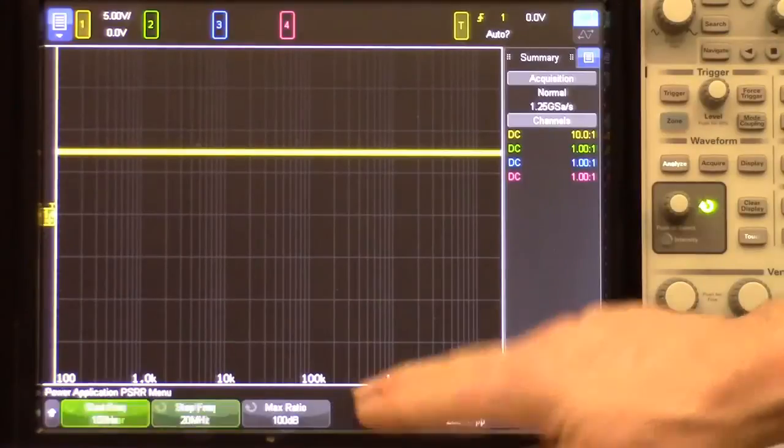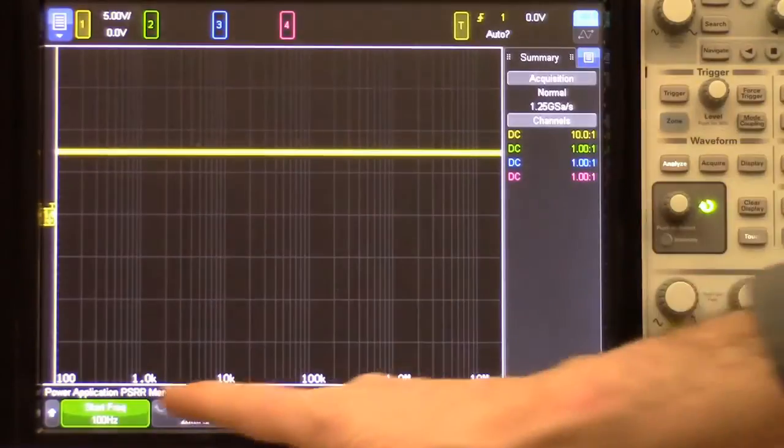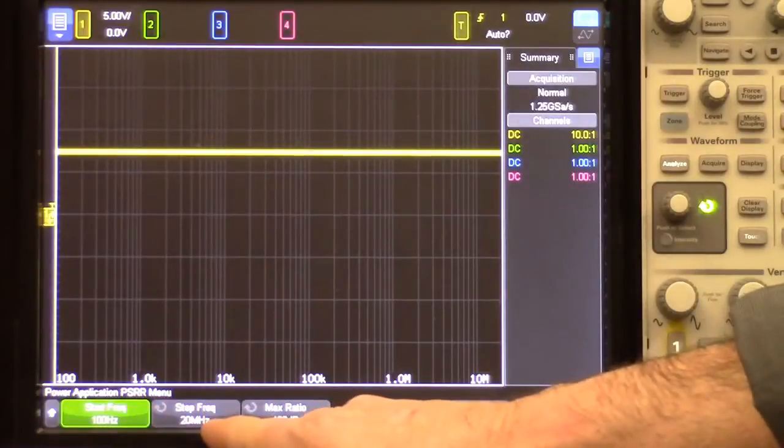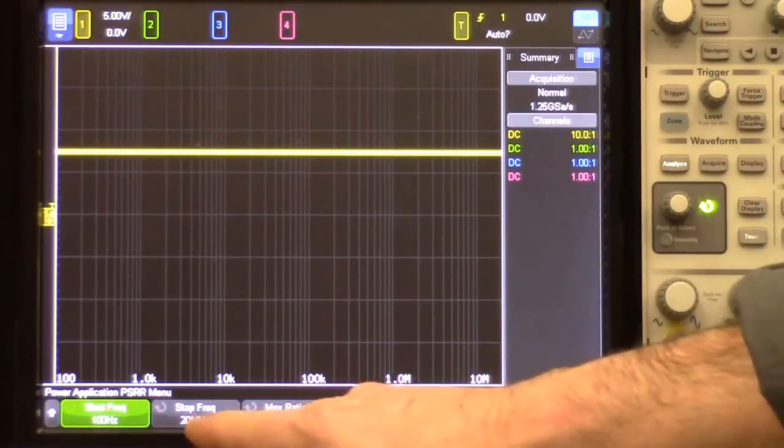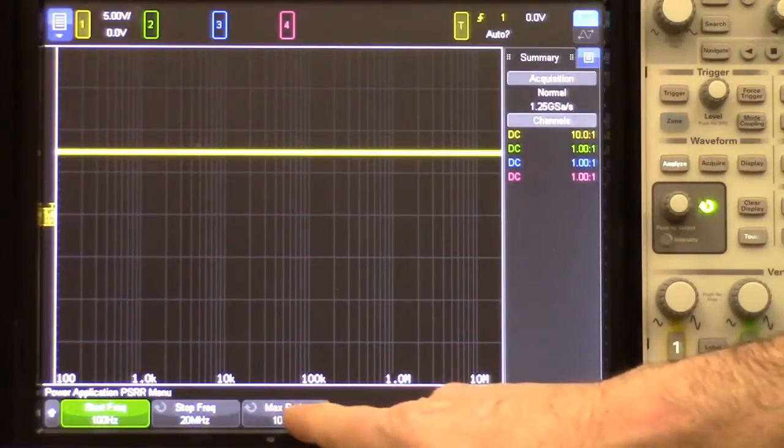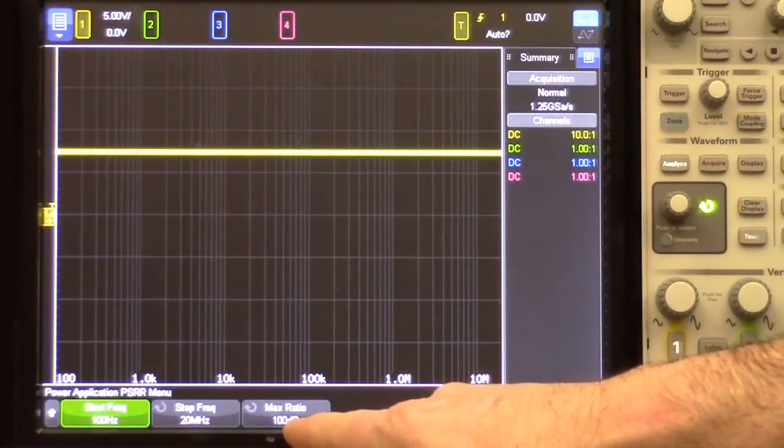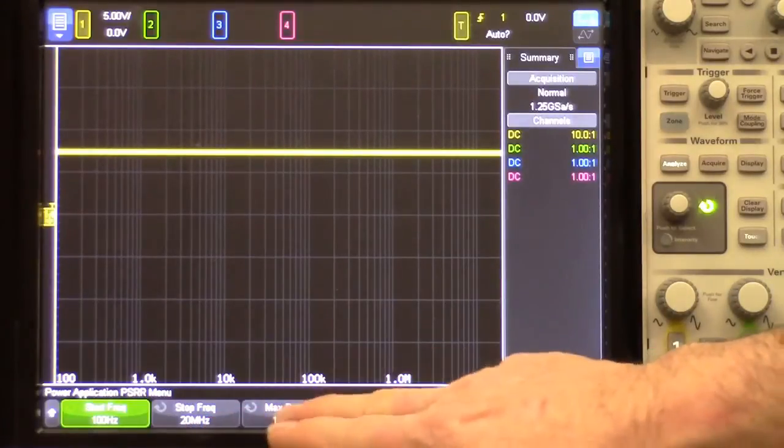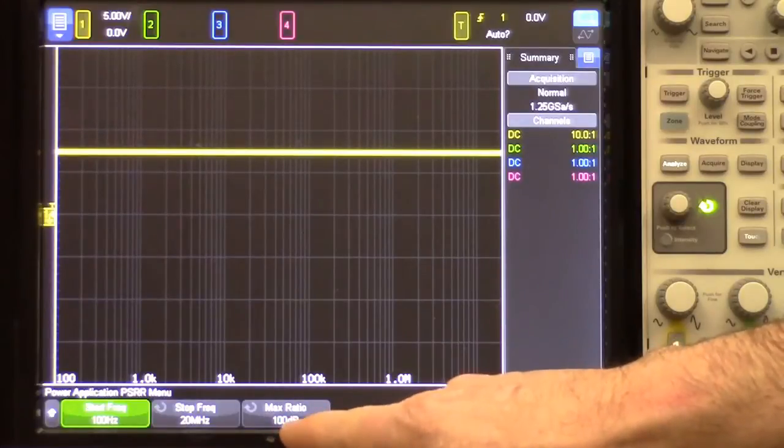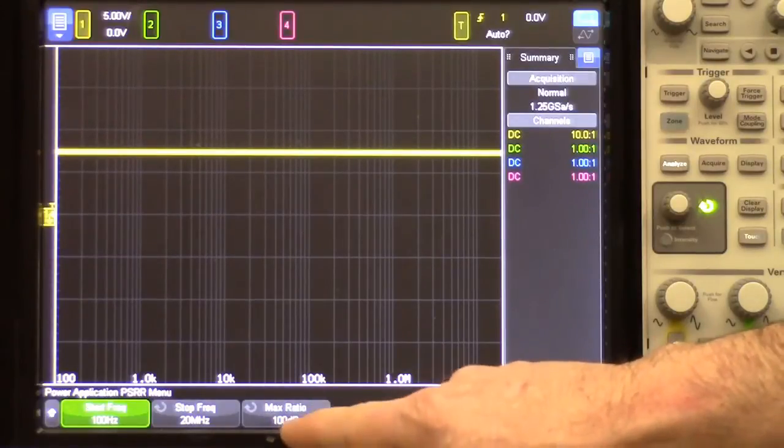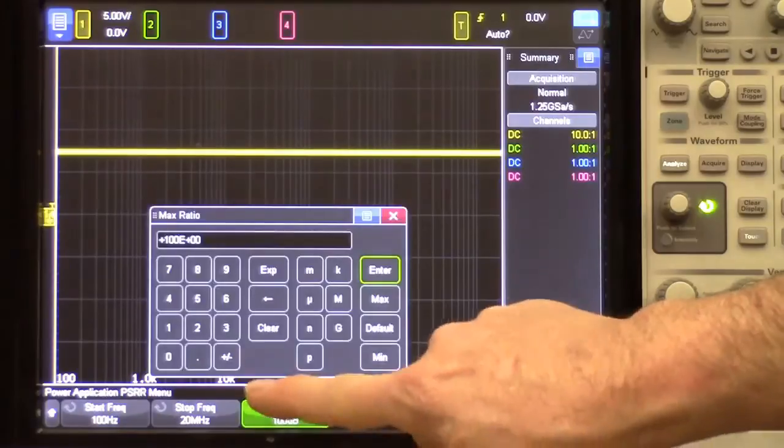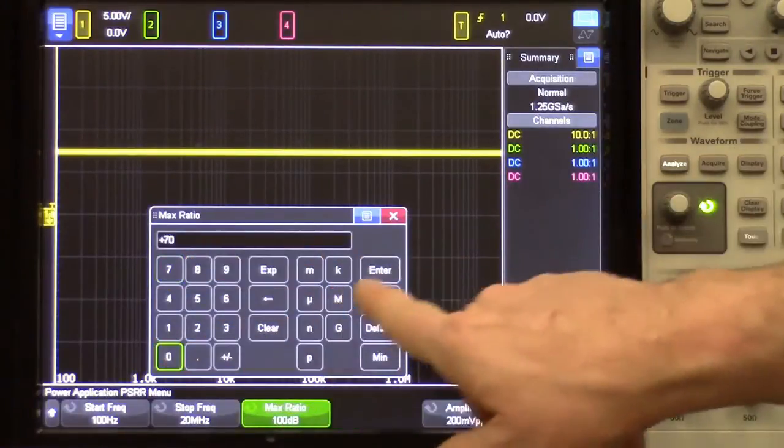Next, I'll go into the settings menu. This is where we can define our test parameters. I can set the start and stop frequency. I'm going to use the default of 100 hertz up to 20 megahertz. I can set the max ratio. This is the max plotting ratio. 100 dB is a bit too high. The scope actually can't measure that high. So let's change this to 70 dB.